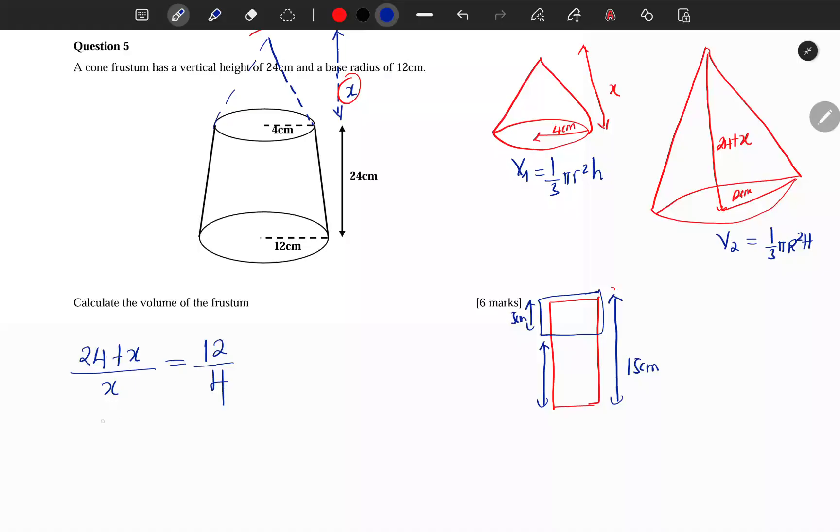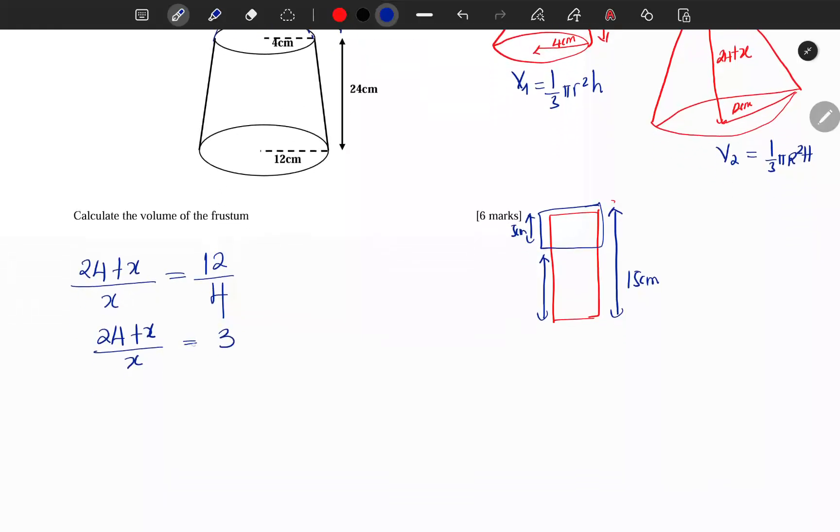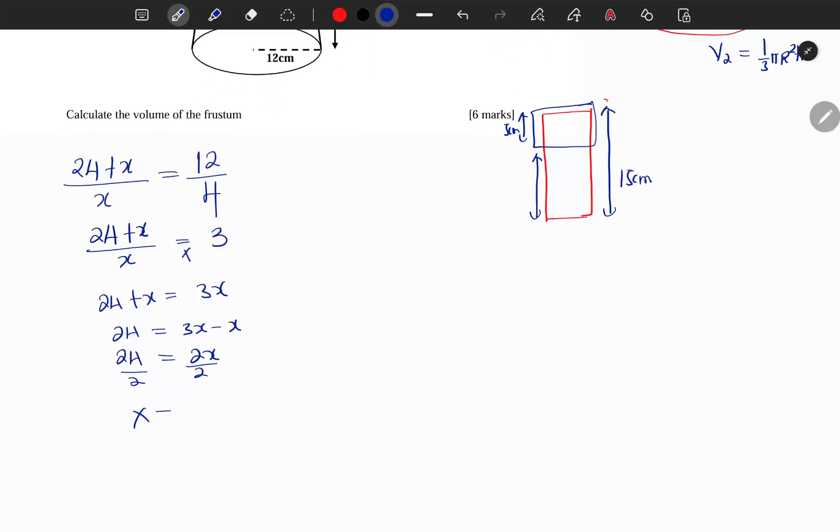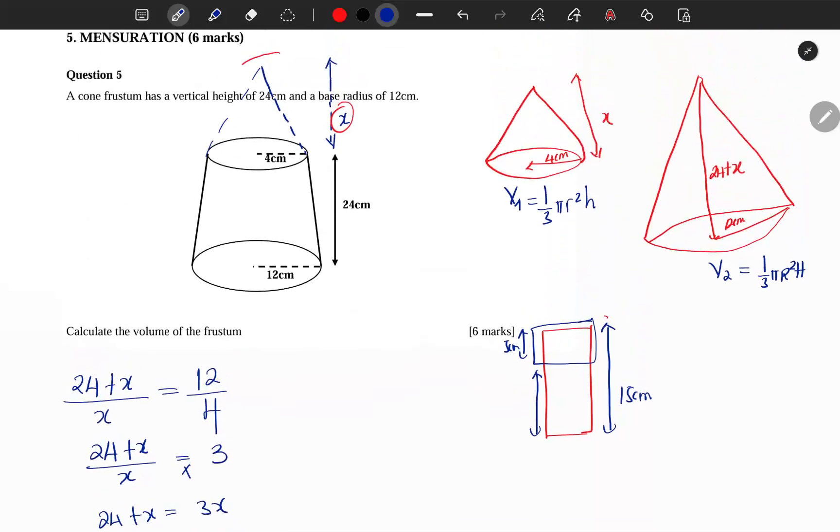Now I know that 4 can go into 12, so I'm going to keep my 24 plus x over x is equal to 3. Now multiply here, you get 24 plus x is equal to 3x. So we get 24 is equal to 3x minus x, and you get 24 is equal to 2x, over 2, and you get your x is equal to 12 centimeters.